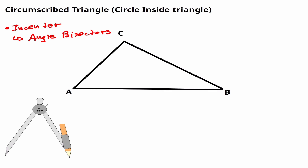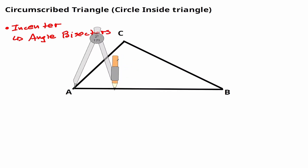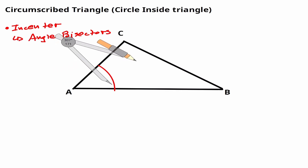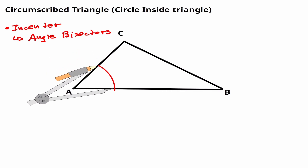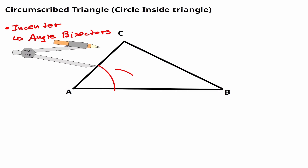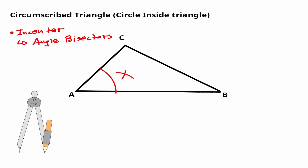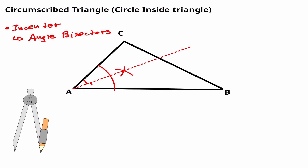Let's start by bisecting angle A. Let me put my compass at angle A and create an arc. Now let me measure more than half of this arc — here's the full length of arc A, so let me close it a little bit, just less than half. Let me create a mark on the inside, and do the same coming from the other vertex. Now that intersection — let's connect it with the vertex. That's an angle bisector, and we know that this angle is equivalent to this angle.